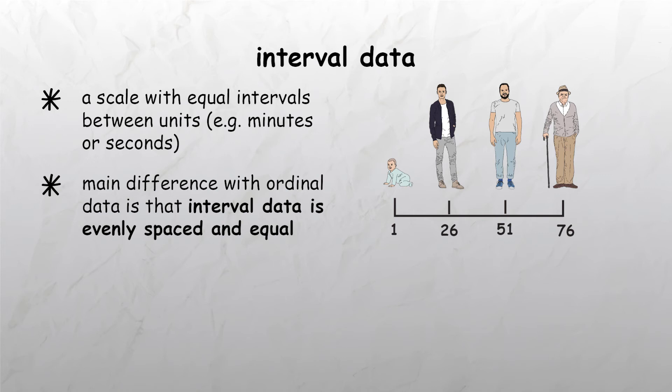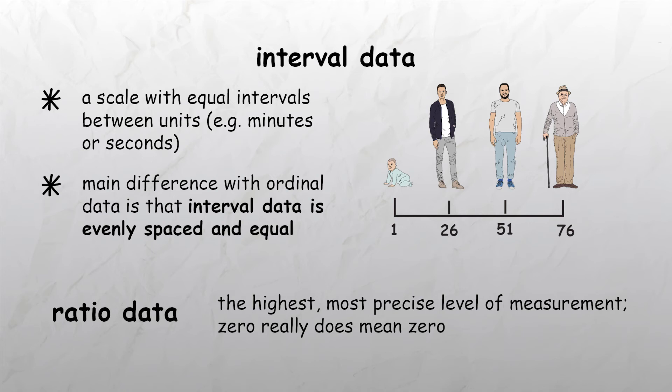The fourth kind of data is ratio level data, which is often grouped together with interval data. The main difference is that ratio level data is the highest, most precise level of measurement. Unlike with interval level data, with ratio data, zero really does mean zero.